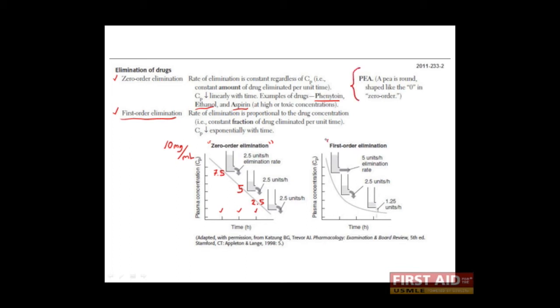First-order elimination, on the other hand, is elimination which proceeds by a certain fraction per unit time. You can see in our hypothetical example that this fraction is 0.5, or 50%.